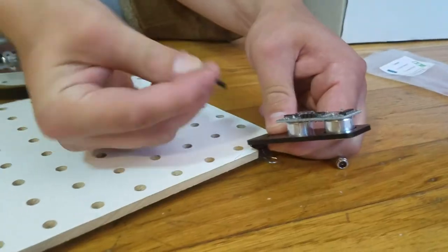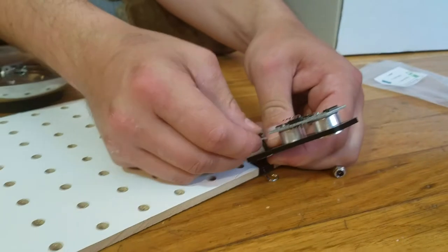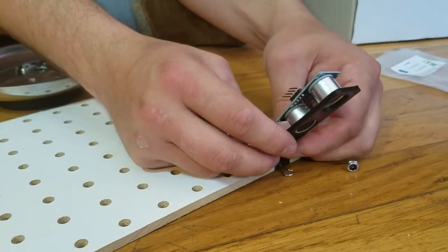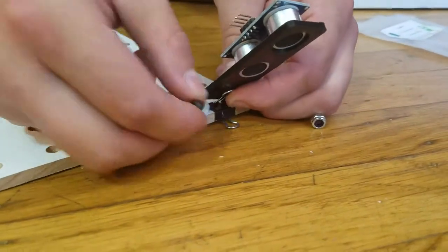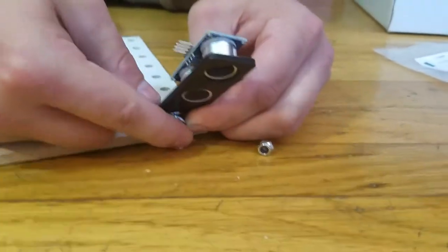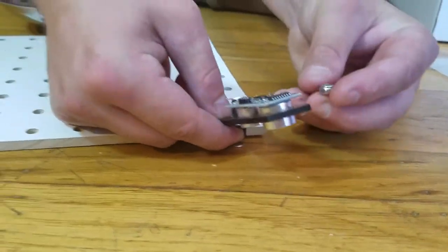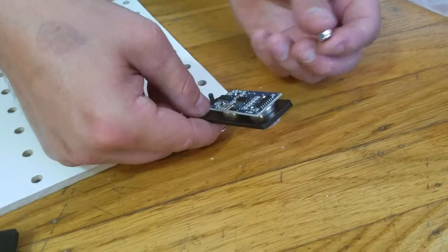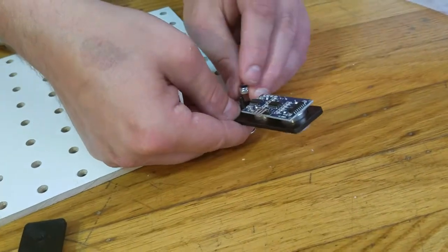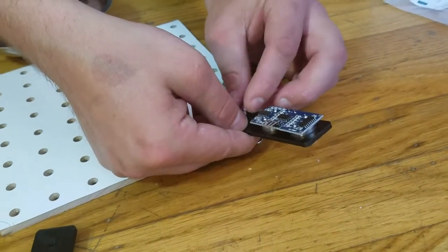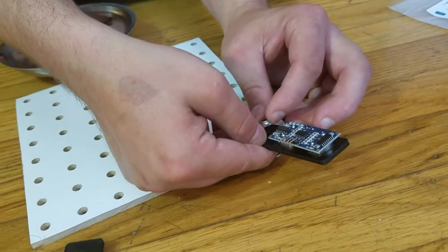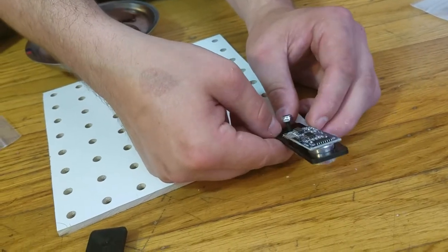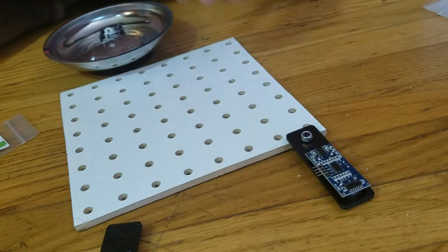We're gonna take the bolt and go through from the top—oh wait, no, we want to go up from the bottom like that. Then we'll get the lock nut and put it on with finger tightening.